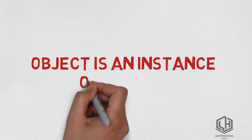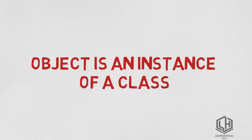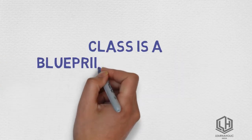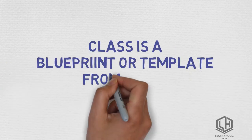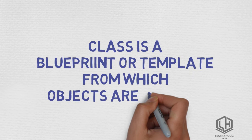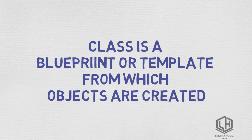First: object is an instance of a class, whereas class is a blueprint or template from which objects are created.